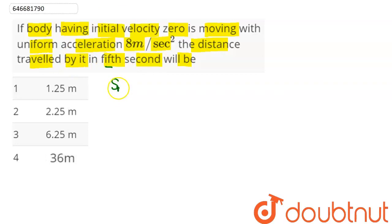The distance covered in the nth second is given by the formula S_nth = u + (a/2)(2n - 1), where u is the initial velocity.